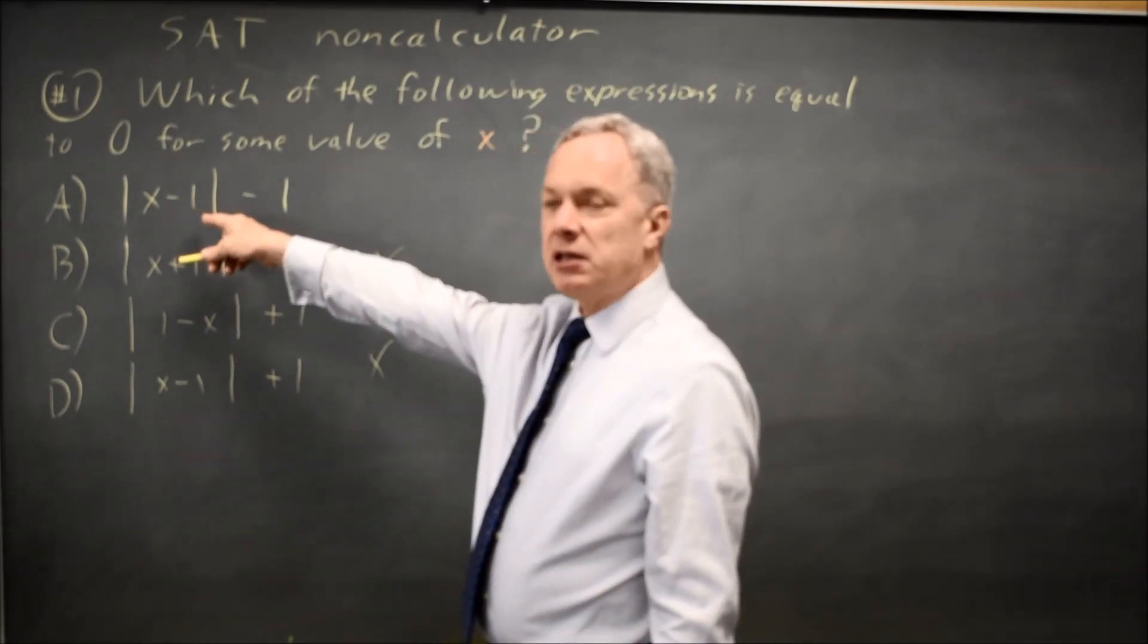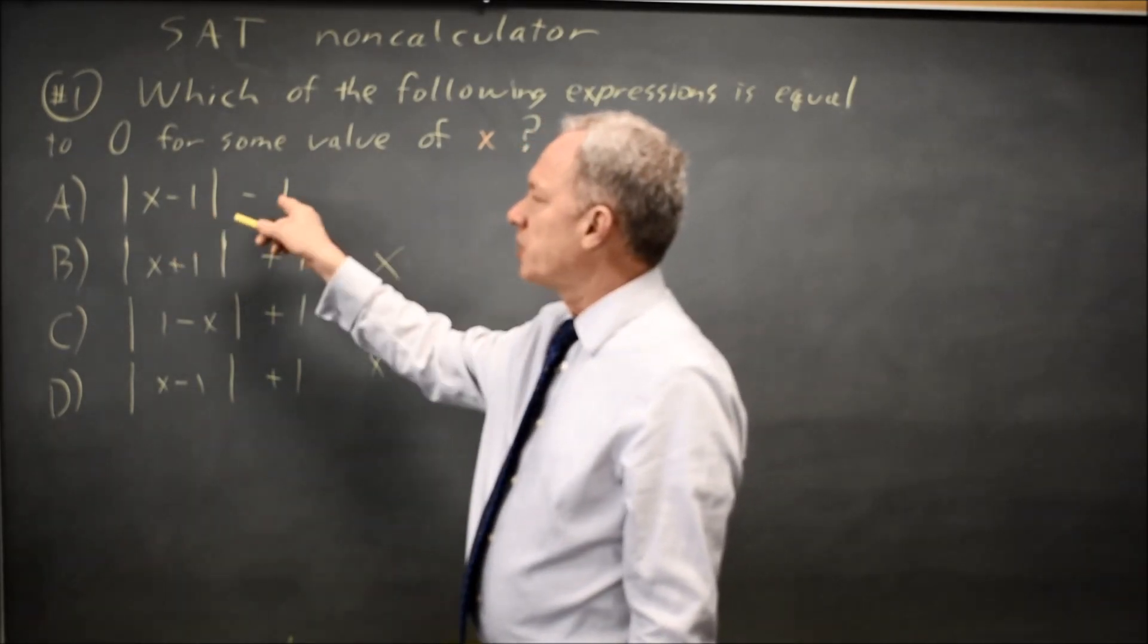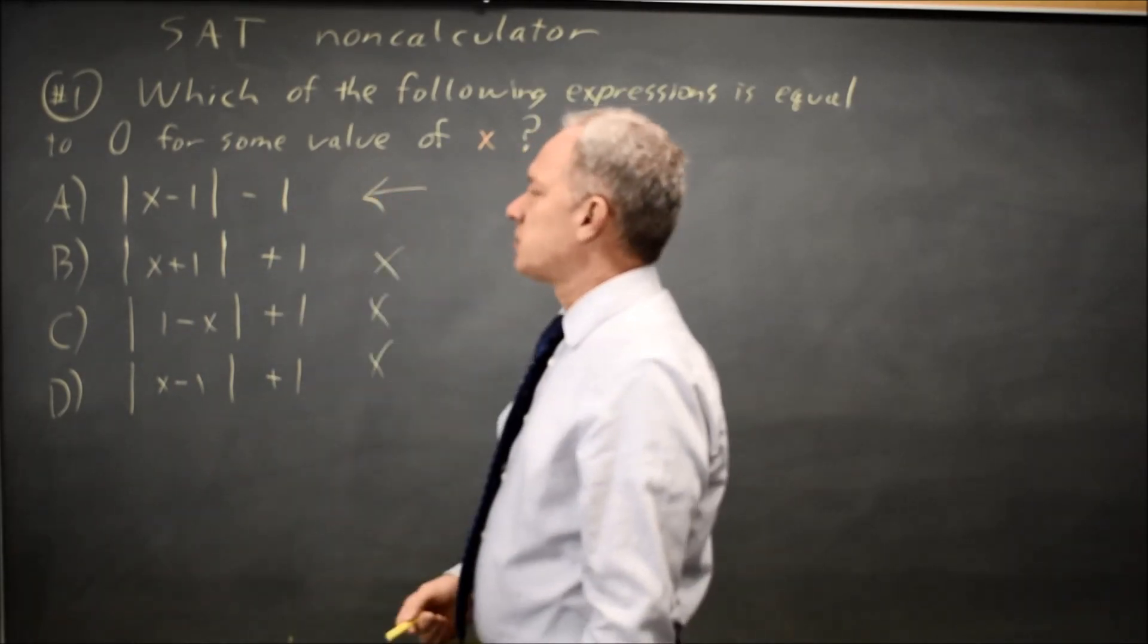An absolute value can equal one, in which case the absolute value minus one equals zero, so this would be the correct answer.